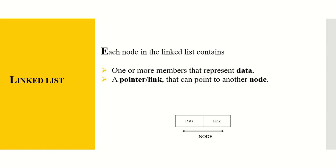Each node in the linked list contains one or more members that represent data, and a pointer or link that can point to another node. Here you can see an example of a node which consists of a data field and a link field. A simple linked list creation is covered in another video on singly linked lists.